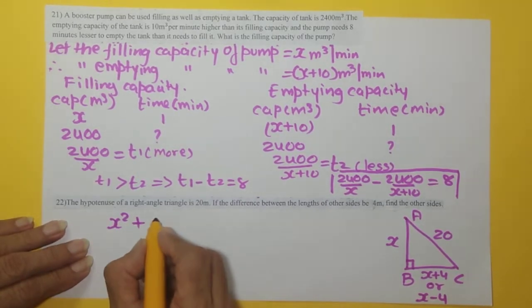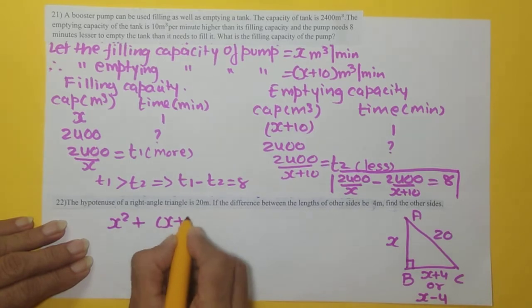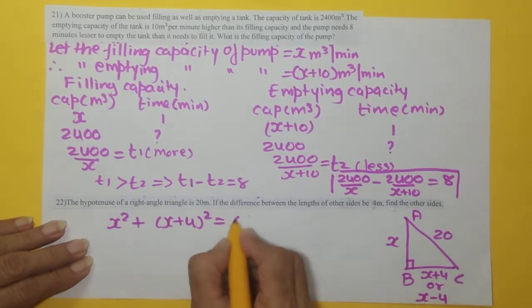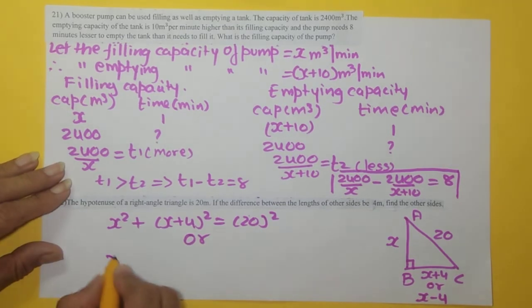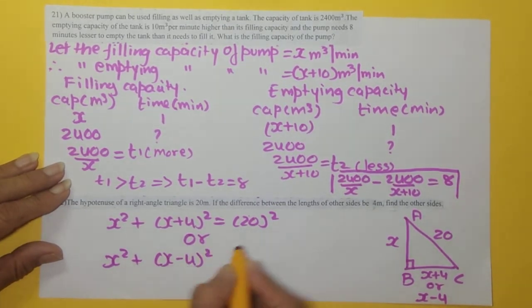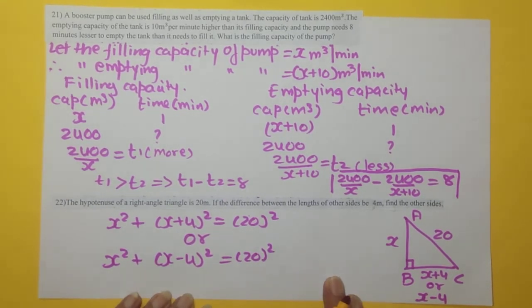Now by Pythagoras, the equation will be x square plus x plus 4 whole square is equal to 20 square, depending on what you have taken, whether x plus 4 or x minus 4.